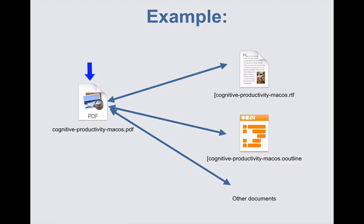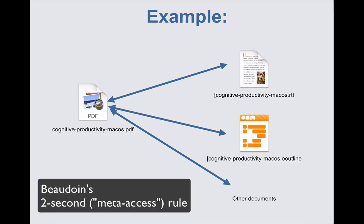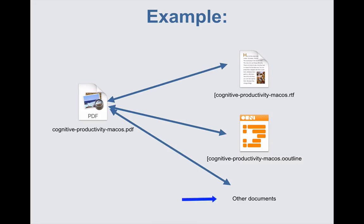This conceptual schematic shows that I have linked a PDF book on the left to a TextEdit RTF document, and an OmniOutliner document, and other documents. Each note takes less than two seconds to create, file, link, tag, etc. You can link the source to as many other documents as you want.